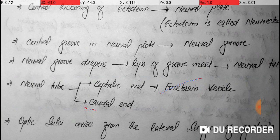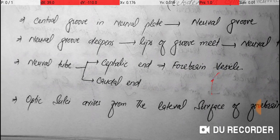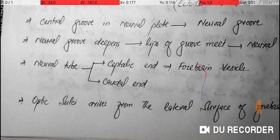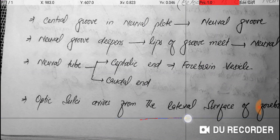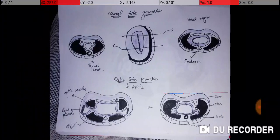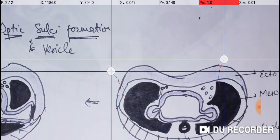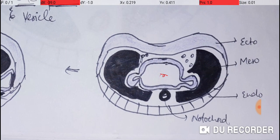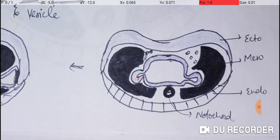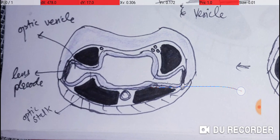So far we have discussed: the neural groove deepens to form the neural tube, and the neural tube forms the forebrain vesicle at the cephalic end. Now, the optic sulci arise from the lateral surface of the forebrain. As you can see here, from the forebrain vesicle two sulci arise — one on each side — and these are called the optic sulci.